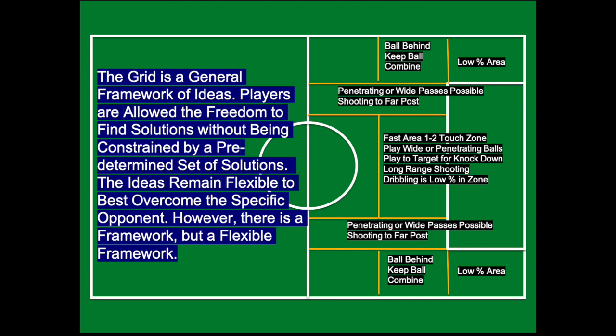Just behind the low percentage area out wide, if the defense is holding a high line, maybe a ball in behind them to the far post could be great. Maybe it's a ball on the ground to a striker or attacking center mid penetrating the box. Or maybe you keep possession for five or six passes out wide, draw the defense over, and then hit them on the weak side of the field where there's more space. These zones give you a general framework, and the ideas can be adjusted depending on who you're playing and where the vulnerabilities of the other team are.